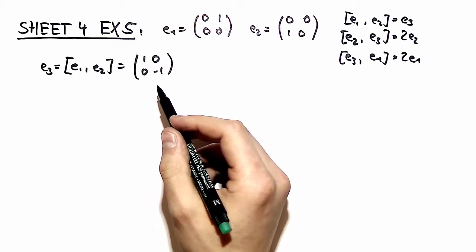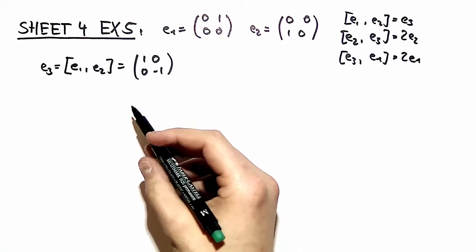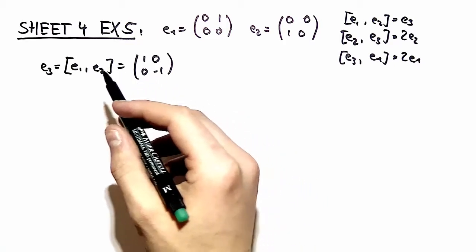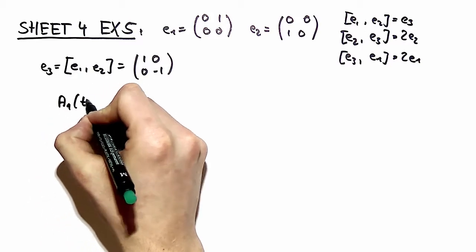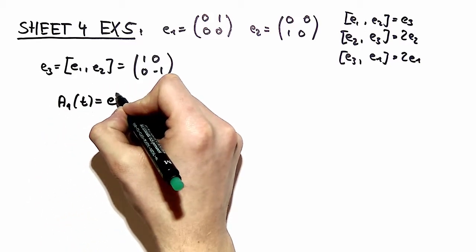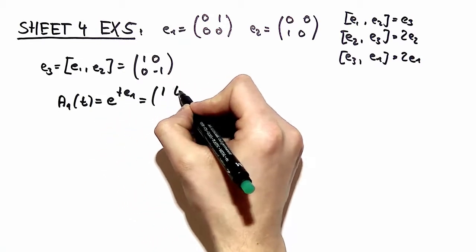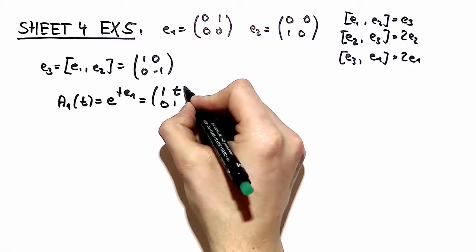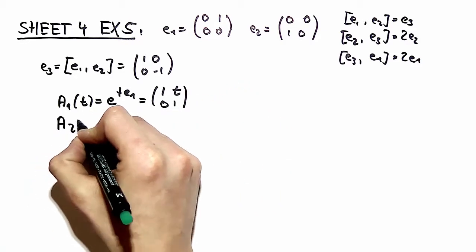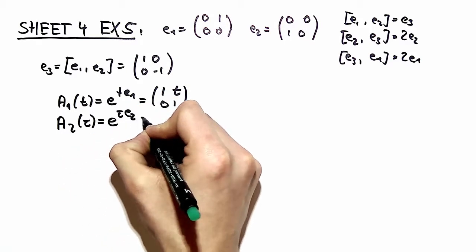Now we want to calculate the representation of this three parameter group and we have to do three different exponentials. For example, we have a1 of t which is e to the t e1, and this calculation you already did in exercise number three part a.